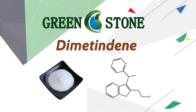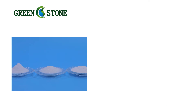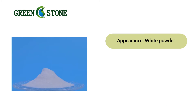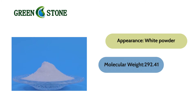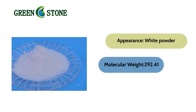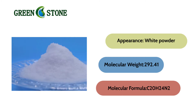Dimetindine. Introduction. Appearance: white powder. Molecular weight: 492.41. Molecular formula.